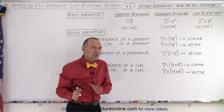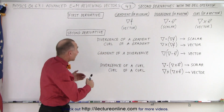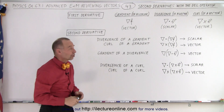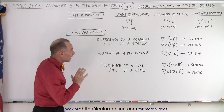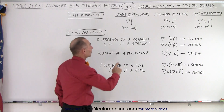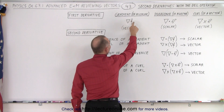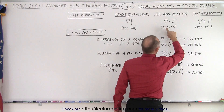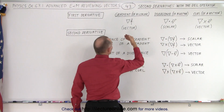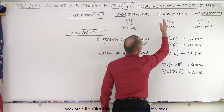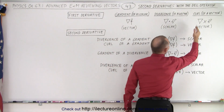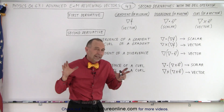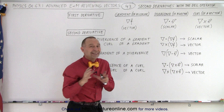But what if you want to do a second operation, kind of like taking a second derivative? We're not saying it is a second derivative — it's like taking the second derivative. We have to be careful because the gradient can only be done on a scalar quantity, the divergence can only be done on a vector quantity, and the result of a gradient is a vector, the result of divergence is a scalar, and the result of a curl is a vector. So when you do the first operation, there's only a limited number of things you can do with the second operation.